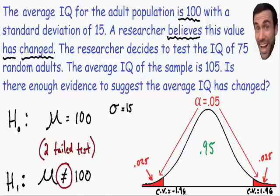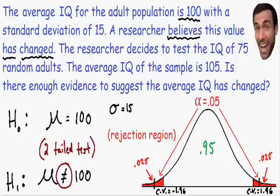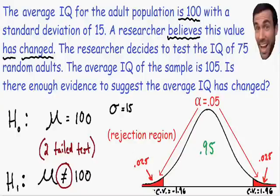Why are these critical values so important? They separate the red shaded area — the rejection region — from the middle of the curve. In our next step, we perform a test that gives us a z value for our sample. If that z value falls in any of the rejection regions, then we can reject our null hypothesis, meaning we reject that the average is equal to 100.